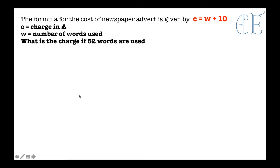The formula for the cost of a newspaper advert is given by c equals w plus 10, where c is the charge in pounds and w is the number of words used. What is the charge if 32 words are used? Just stick to the formula and don't panic. C equals w plus 10, and w is 32 words, so c equals 32 plus 10, so c equals 42 pounds.